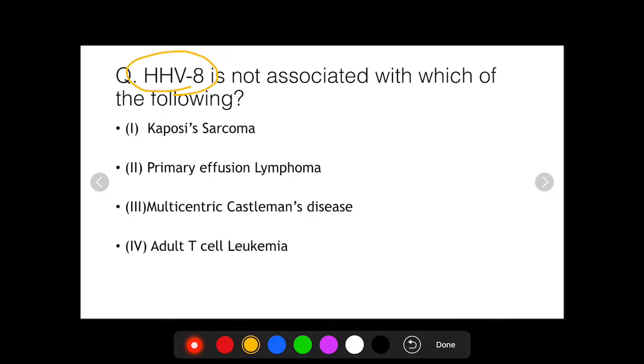Human herpes virus 8 is not associated with which of the following? The options were Kaposi's sarcoma, Primary Effusion Lymphoma, Multicentric Castleman's Disease, or Adult T Cell Leukemia.